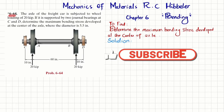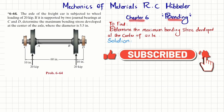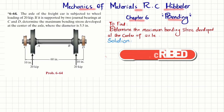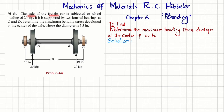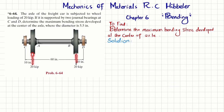Welcome back. Problem 6-64, taken from Chapter 6 on bending in Mechanics of Materials by R.C. Hibbeler. The statement is: the axle of a freight car is subjected to a loading of 20 kips. If it is supported by two journal bearings at C and D, determine the maximum bending stress developed at the center of the axle where the diameter is 5.5 inches.